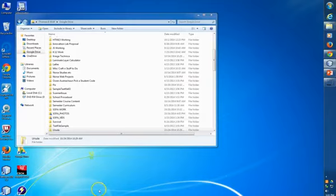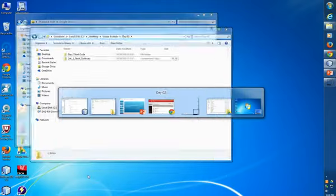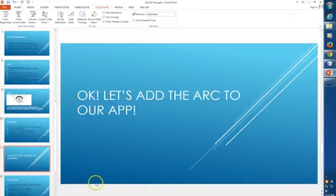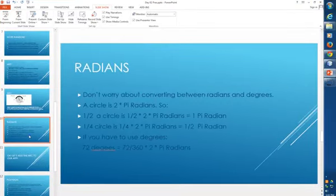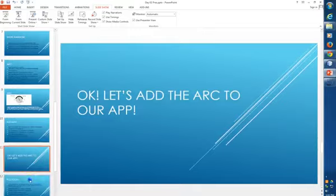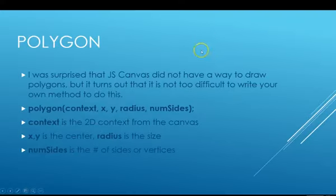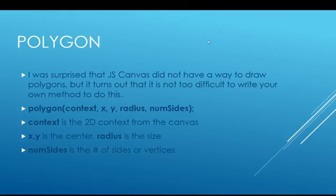That's kind of funny — I found that bug, but it goes to show you how things work when you're doing the programming. It took me a few minutes to figure that out. Now we're going to talk about the polygon and then implement it. The polygon code is just more code — it's not particularly hard, there's just more of it, so it might be a little tricky to get it typed in correctly. I was kind of surprised when I first looked at the JS canvas that it didn't have a polygon method, but it turns out it's not too difficult to write your own.